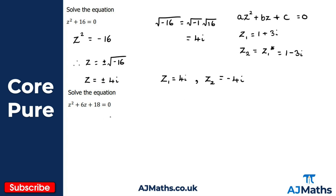Now let's take a look at the second example: solve z² + 6z + 18 = 0. We can't factorize this, so we either complete the square or use the quadratic formula — it's completely up to you. I'm going to complete the square. We take the coefficient of z, giving (z + 3)², then subtract that value squared, so minus 9, and include whatever's left, plus 18, all equal to zero. Simplifying: (z + 3)² − 9 + 18 = 0, which gives (z + 3)² + 9 = 0.